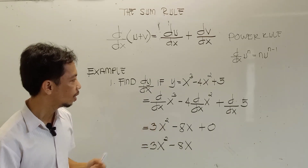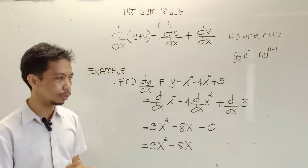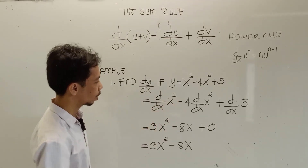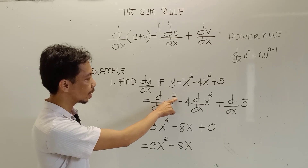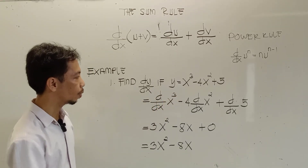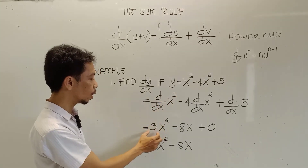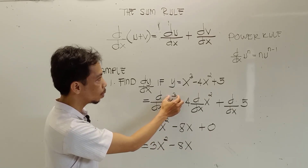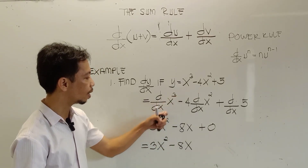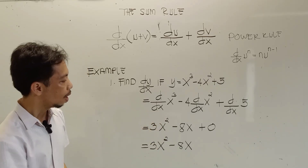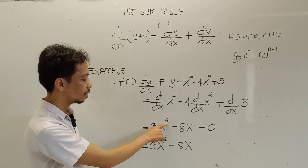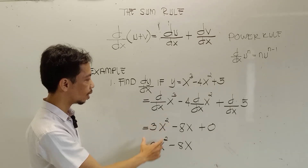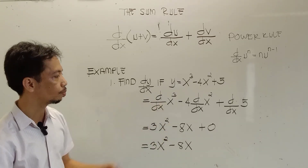Let me repeat. We have x cubed, so our n is 3 — our exponent is 3. We make 3 the numerical coefficient of the variable x, then subtract 3 by positive 1. So, 3 minus 1 gives us an exponent of 2. That is why we have 3x squared as the derivative of x cubed.